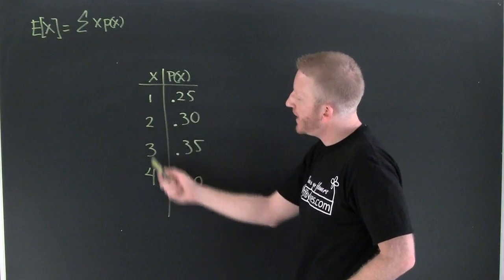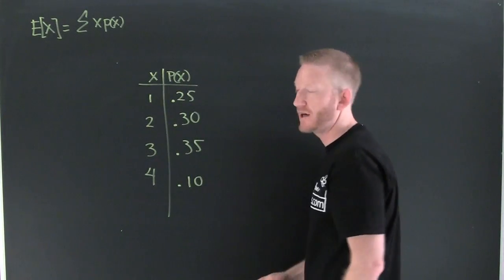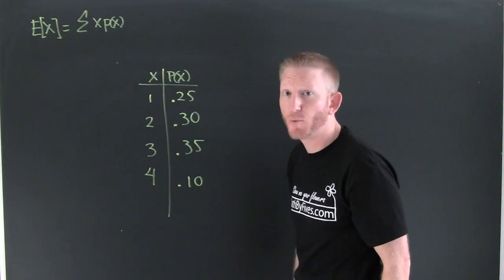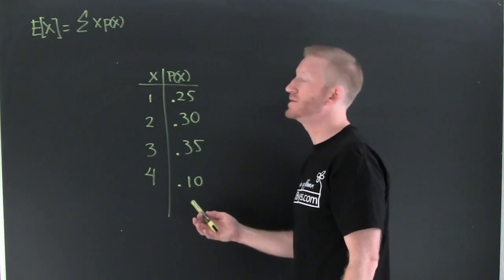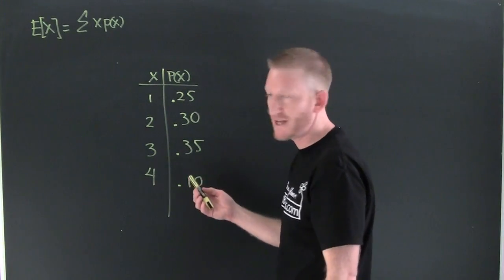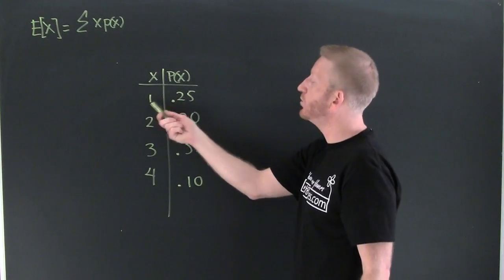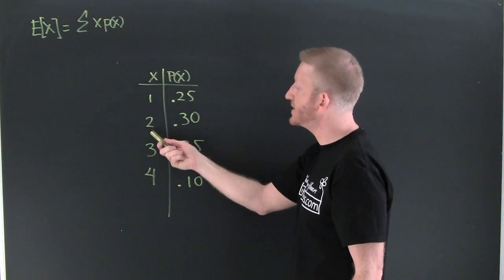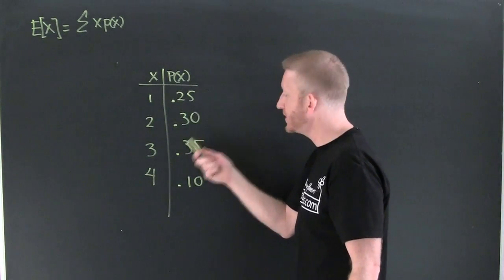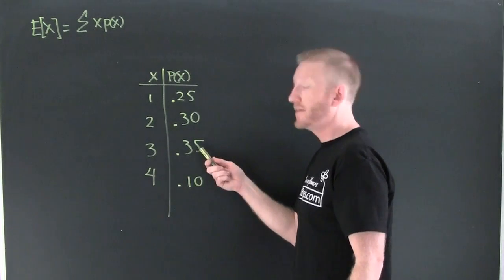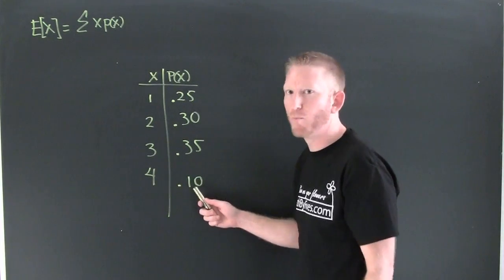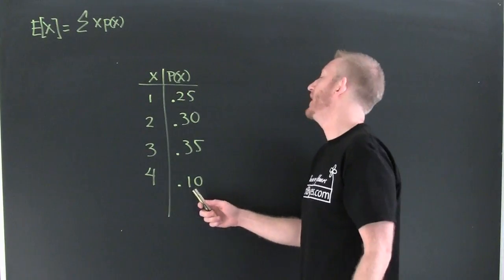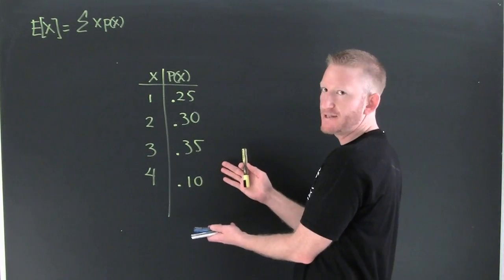Here you have your x values and your p(x) values. Your p(x) values just happen to be your probability of occurrence. Whatever this distribution is modeling or representing, the chance of getting a 1 is 25%, the chance of getting a 2 is 30%, the chance of getting a 3 is 35%, the chance of getting a 4 is 10%.